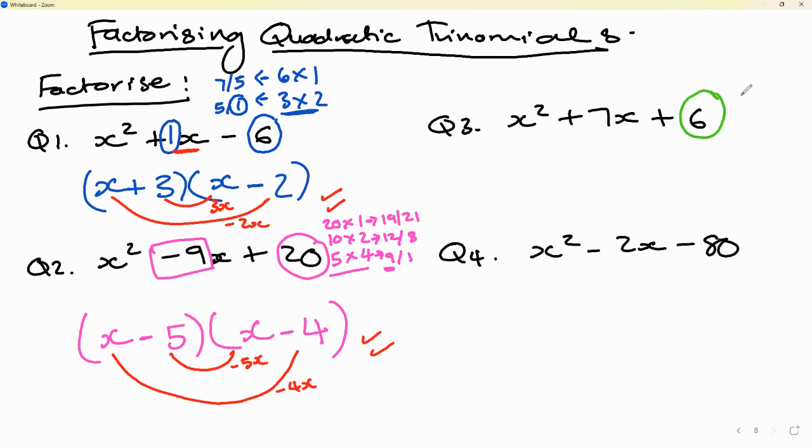Let's go through the next one now. Remember, we look at the last term. And let's write down all the factors. So 6 times 1 or 2 times 3. Now look at the numbers, 6 and 1 and 2 and 3. Add it and subtract it. If you add it, you get 7. If you subtract it, you get 5. If you add this, you get 5. If you subtract it, you get 1 or negative 1. I'm just putting the positive.